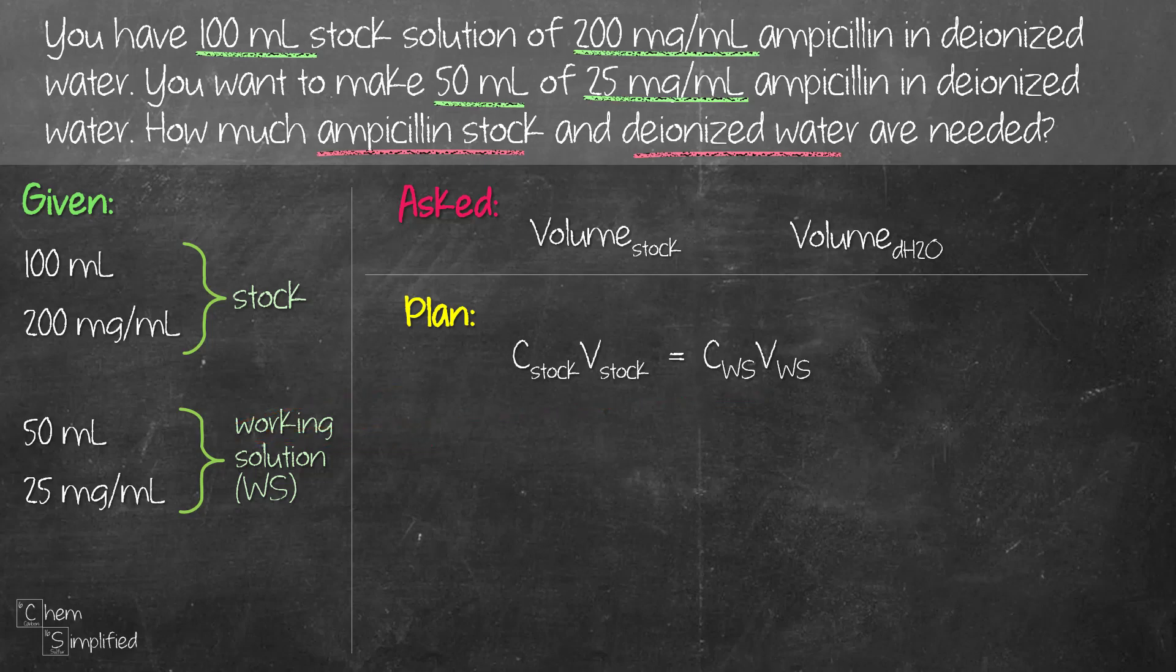So we have all the three info, we plug it in, we can find the volume for stock solution. So volume of stock solution is going to work out as 25 times 50 divided by 200. We bring the 200 to the other side and that comes out to be 6.25 ml.